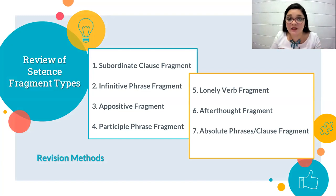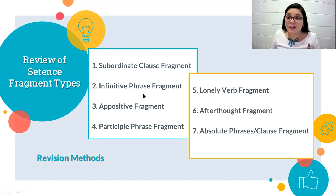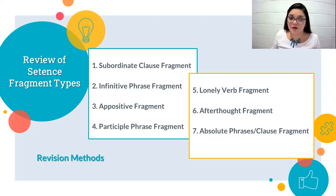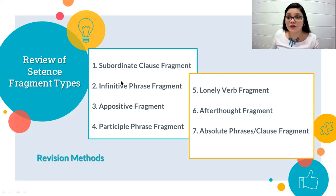Sometimes they do not make sense by themselves because they can be any of these seven mistakes. The first one is subordinate clause fragment — having a marker that represents a subordinating clause, sometimes at the beginning, and that can easily be fixed if you place it next to an independent clause. The second one is infinitive phrase fragment, which has an infinitive and all its pre-modifiers and post-modifiers. You fix it by attaching it to an independent clause, or by using the infinitive phrase as a noun equivalent.